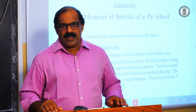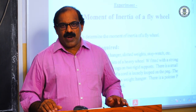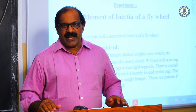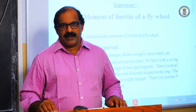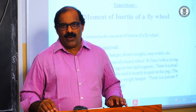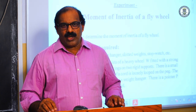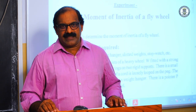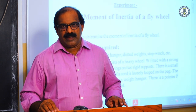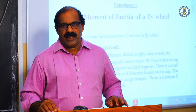The flywheel consists of a heavy wheel W which is mounted on a rigid support with the help of an axle. The axle is provided with a small peg, and we are provided with a long cord. One end of the cord can be wound over the axle passing through the peg, and the other end of the cord we can suspend masses.